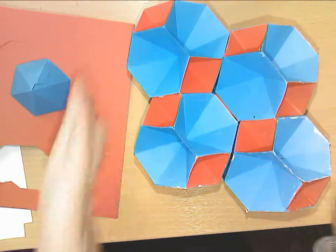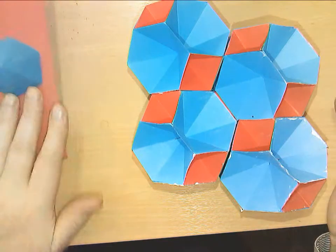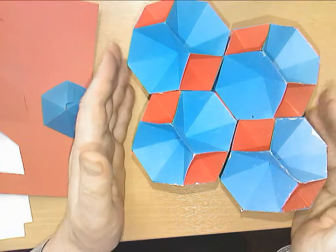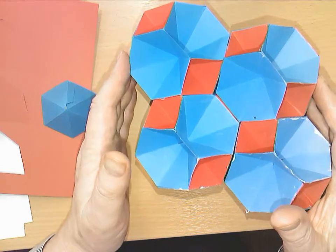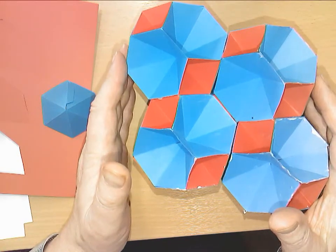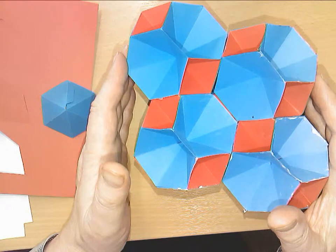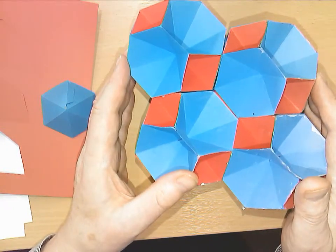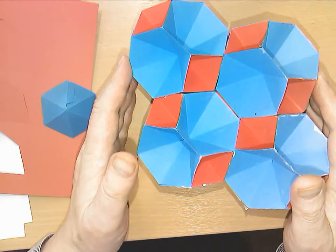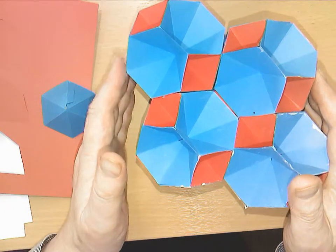When you've made a good number of these and the class has made a good number of these, it turns out that like cubes, this particular shape tessellates three-dimensional space. That is to say, well these are models so they're not perfect, but it should fill space without leaving any gaps whatsoever.